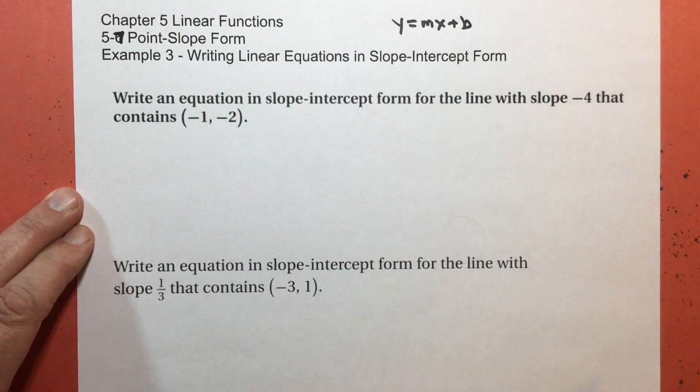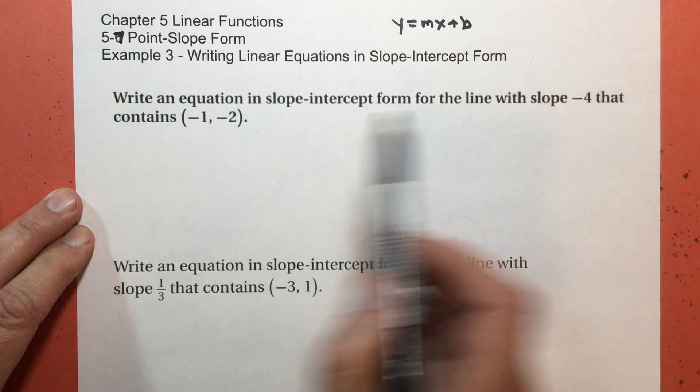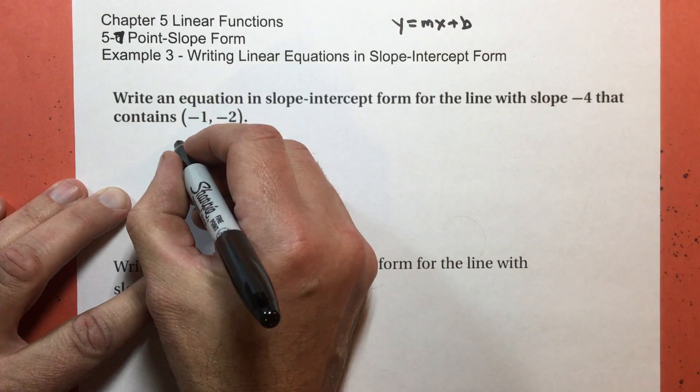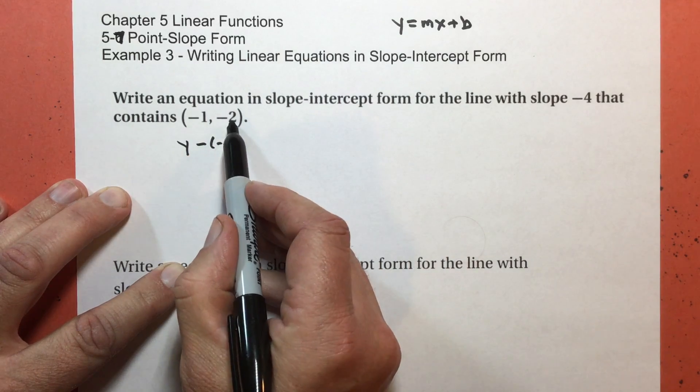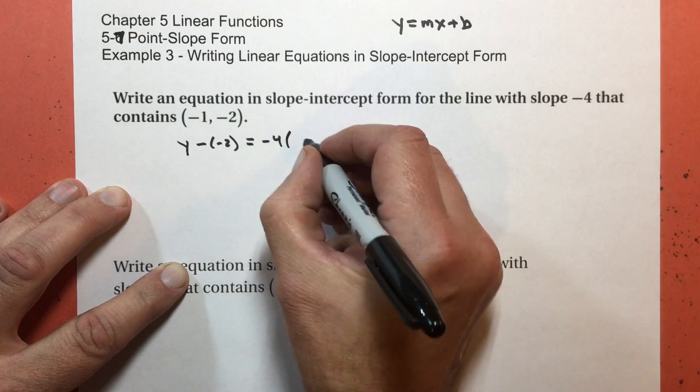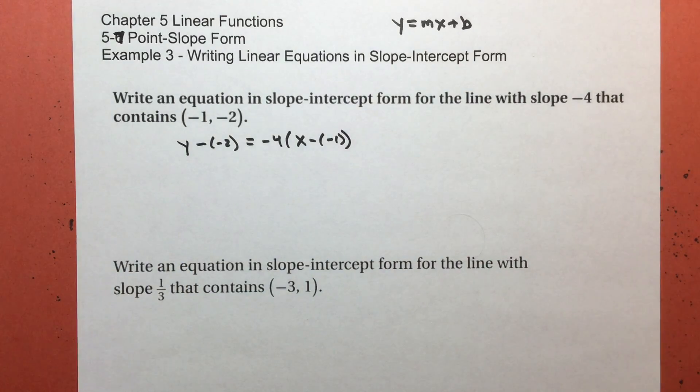So you can do this. First, I have my slope is negative 4, and my point is negative 1, negative 2. So I write y subtract negative 2, because I'm subtracting that, equals my slope, negative 4, times x subtract negative 1. That's point slope form. And hopefully you have that in your notes already.